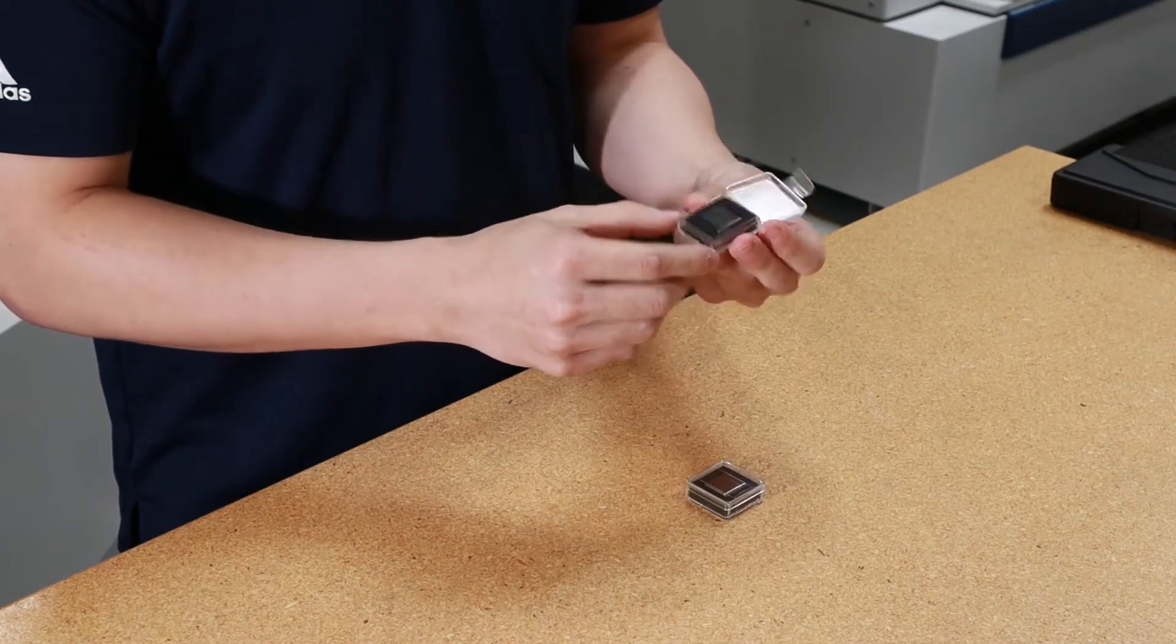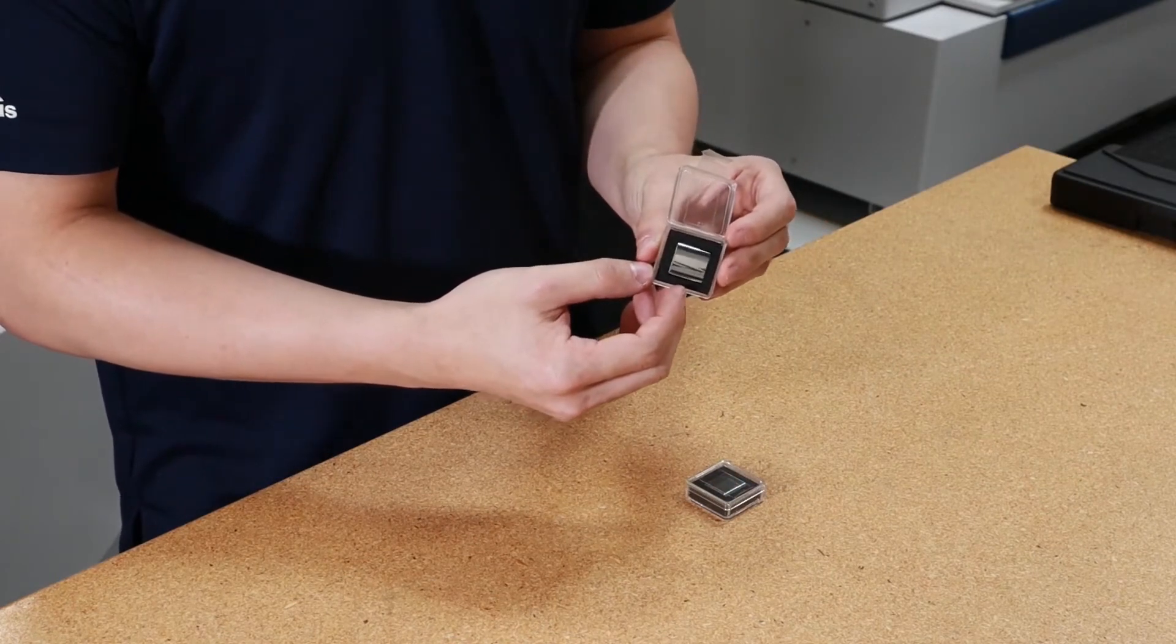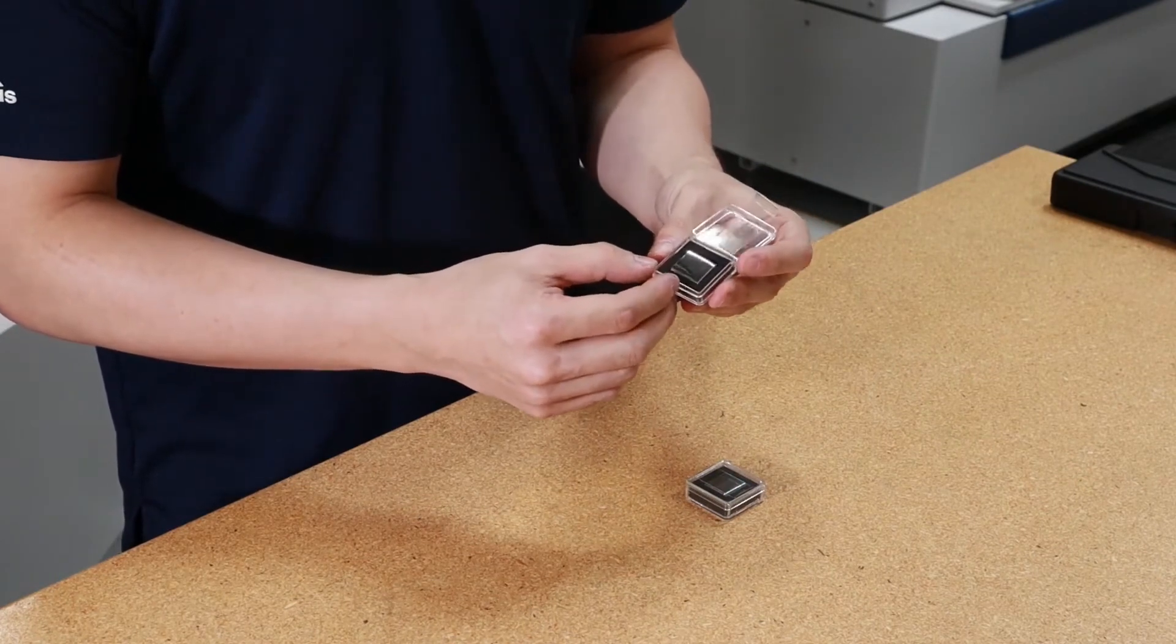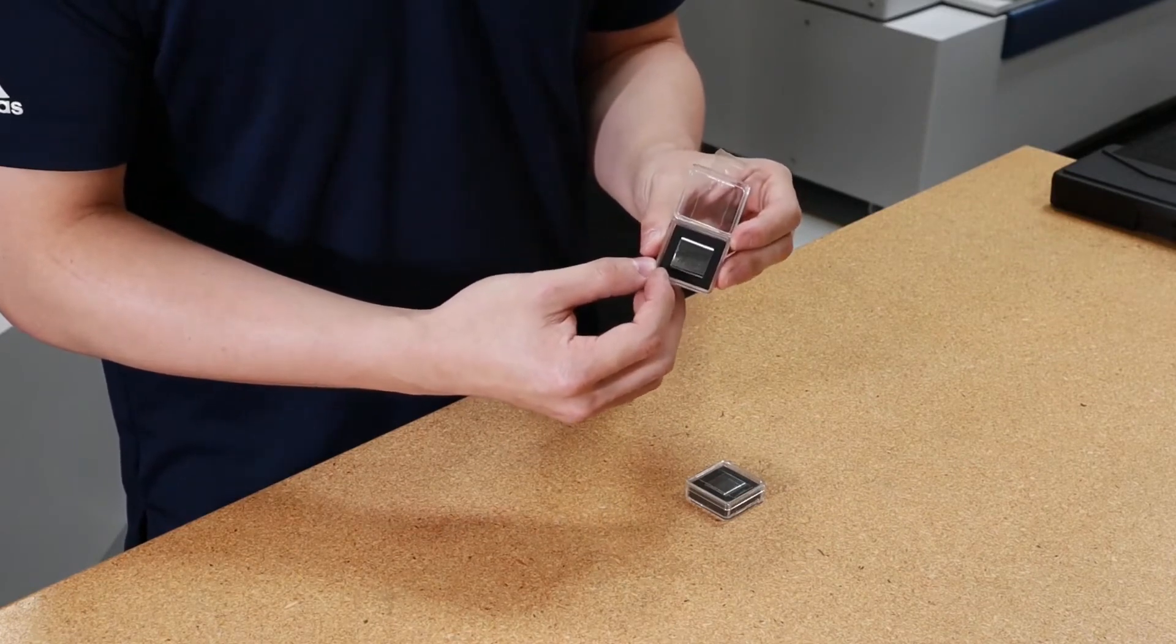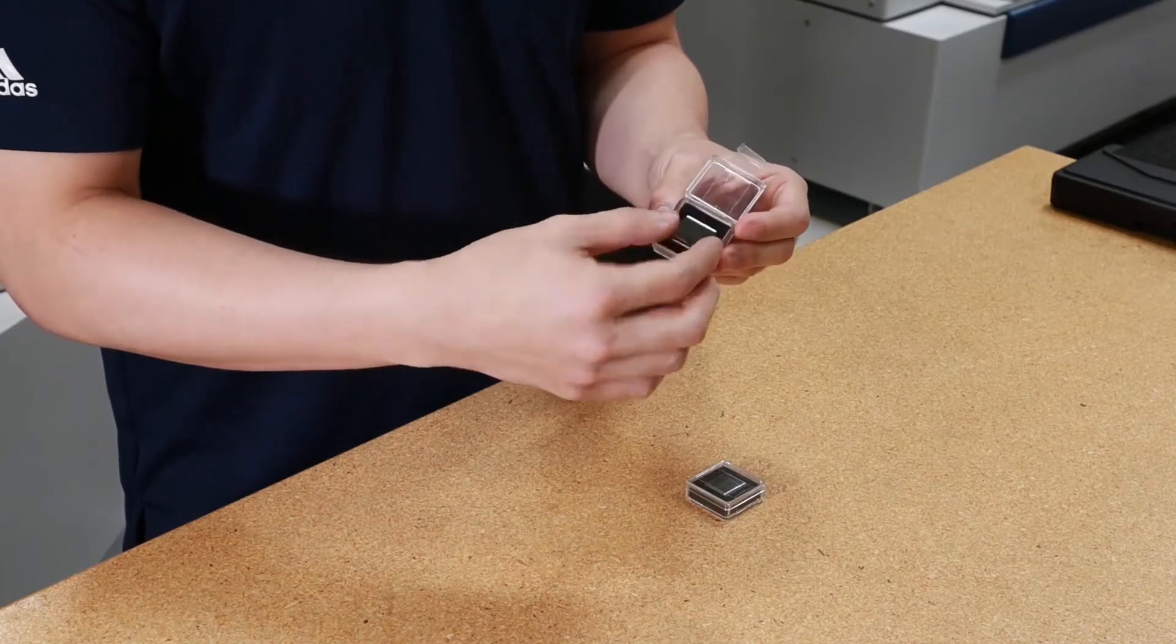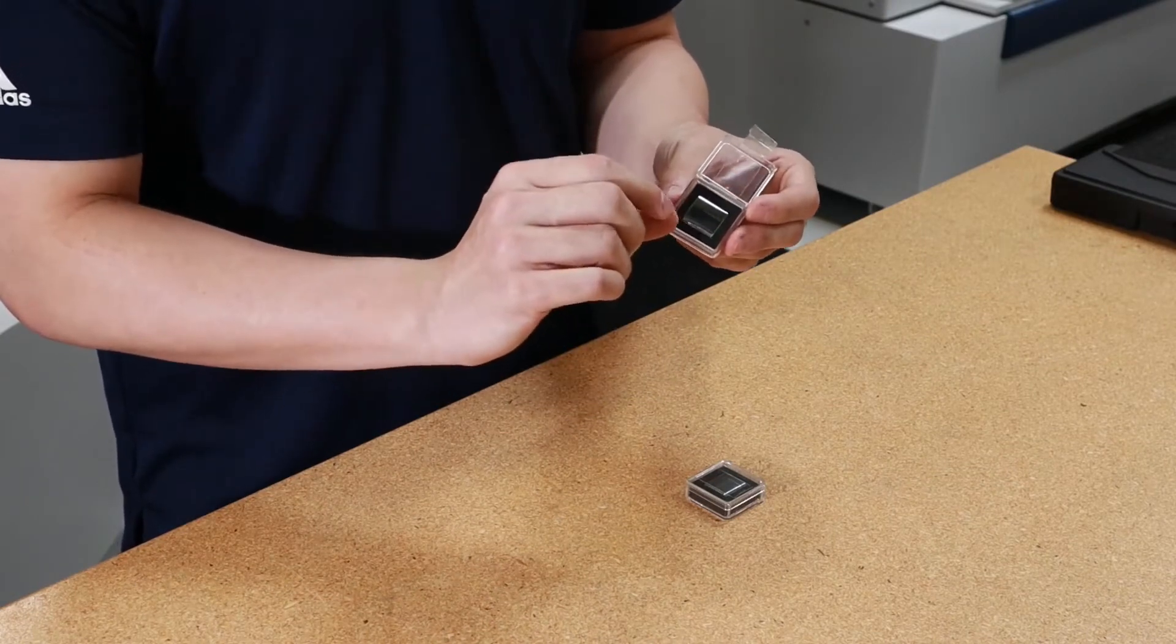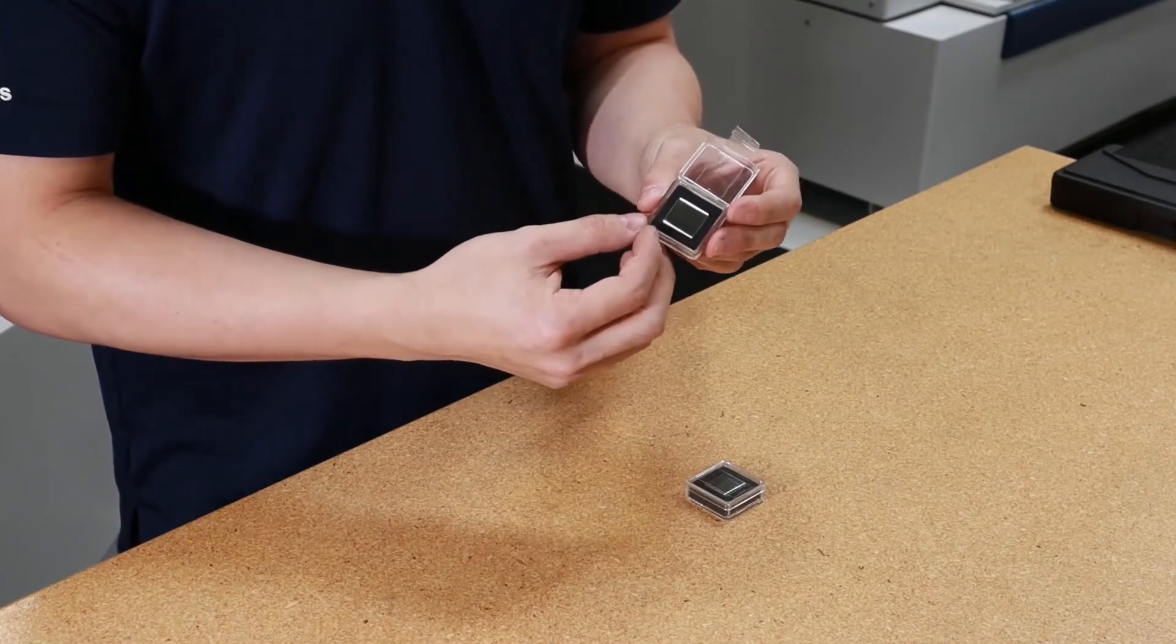If you start directly in the middle with our indexing tool, we can index four spaces to the left and four spaces to the right. Once that's finished, you can take it out and flip it on the other side and use eight times on that side as well.